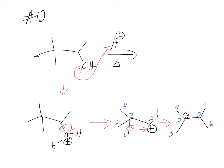H+ is a catalyst here. Water could attack and you can make the alcohol again, but you should be thinking about elimination. Why would it be good to do an elimination here? Because the product would be 4-substituted — tetrasubstituted. So what beta hydrogen are we going to take off? The H on carbon 2. Can we show those electrons going there?